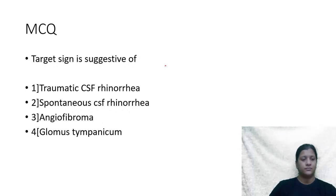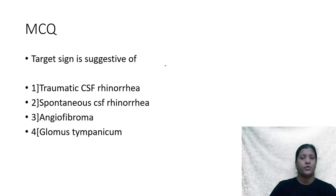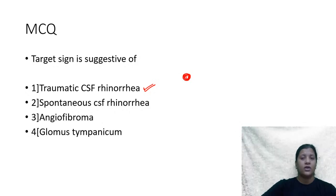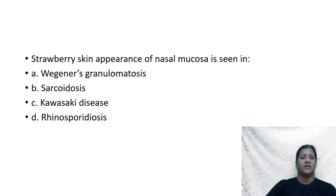Next question: target sign is suggestive of — (A) traumatic CSF rhinorrhea, (B) spontaneous CSF rhinorrhea, (C) angiofibroma, or (D) glomus tympanicum? The answer is traumatic CSF rhinorrhea. The target sign consists of a central red dot surrounded by a halo, and it is specifically seen in traumatic CSF rhinorrhea.